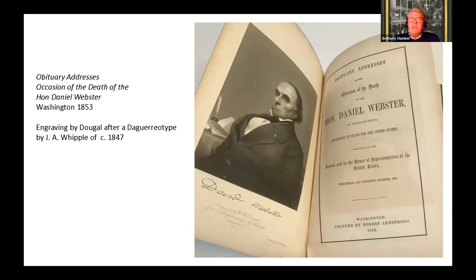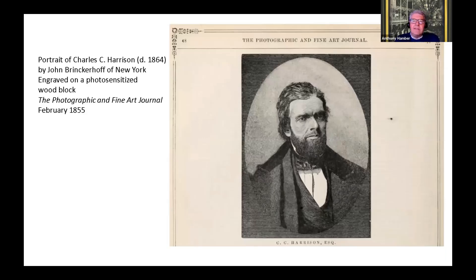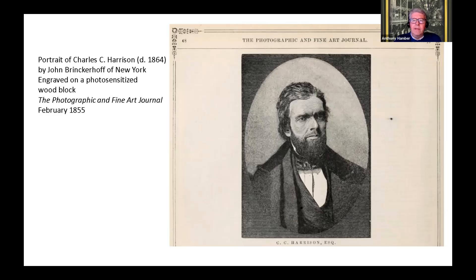Here is an 1853 example of an engraved frontispiece after a daguerreotype by Whipple, on the occasion of the death of the Honourable Daniel Webster. One technique to reproduce photographs as wood engravings was to coat the woodblock with a photochemical emulsion, print the photograph onto this layer on the woodblock, then engrave through the photographic print to produce a woodcut ready for printing — washing off the remainder of the photographic image. This is an example from 1855, a portrait of the photographer Charles Harrison after a photograph by John Brinkerhoff.